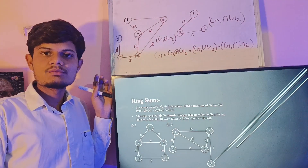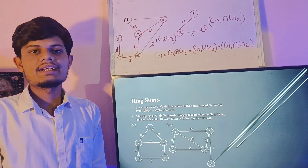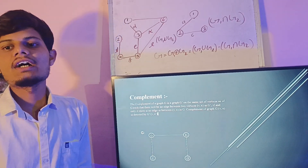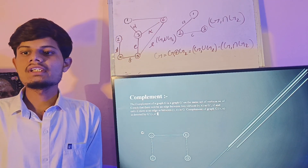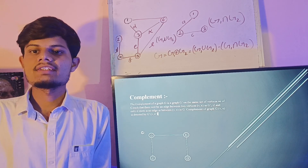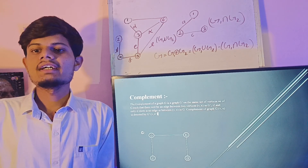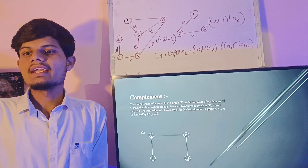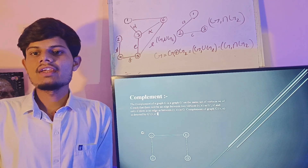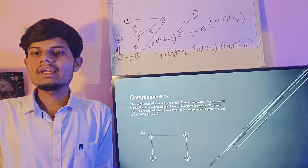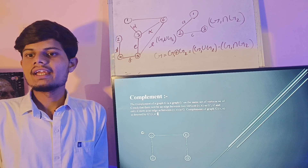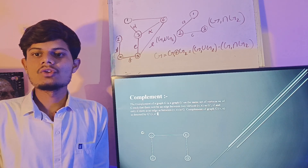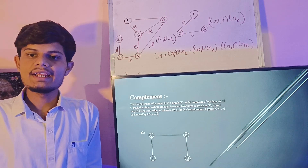Now let us move to our next topic, that is complement. The complement of graph G is the graph G-bar on the same set of vertices as G, such that there will be an edge between two vertices v and e in G-bar if and only if there is no edge between v and e in G. The complement of a graph G(V, E) is denoted by G-bar(V, E-bar).